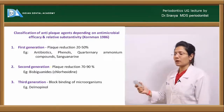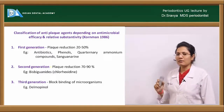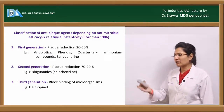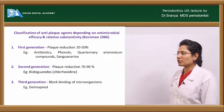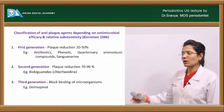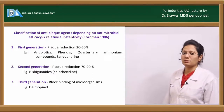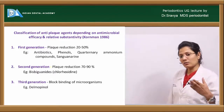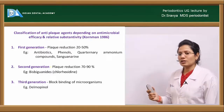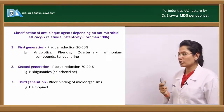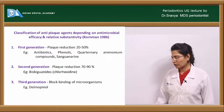First-generation agents reduce plaque score by 20 to 50%, and include antibiotics, sanguinarine, phenols, and quaternary ammonium compounds. Second-generation agents reduce plaque by 70 to 90% and include bisbiguanides, under which comes chlorhexidine gluconate. Third-generation agents include delmopinol, which blocks the binding of microorganisms.